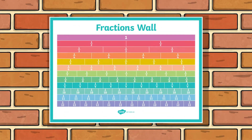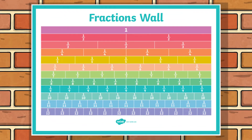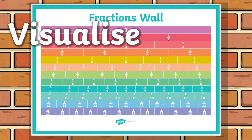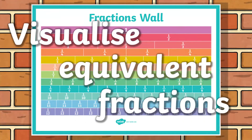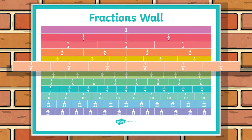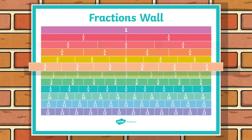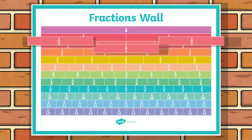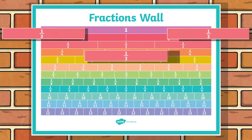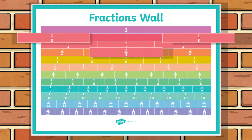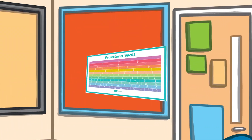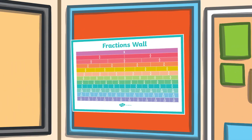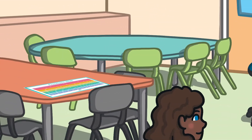The pastel coloured fraction wall is a brilliant starting point for children to help them to visualize equivalent fractions. Each line on the wall is a whole number and each brick on the wall represents a fraction of a whole. I would recommend putting this up in your classroom to be displayed or to be used as a tabletop resource.